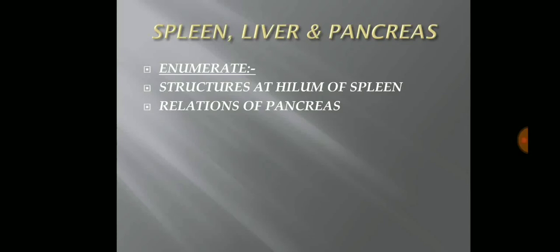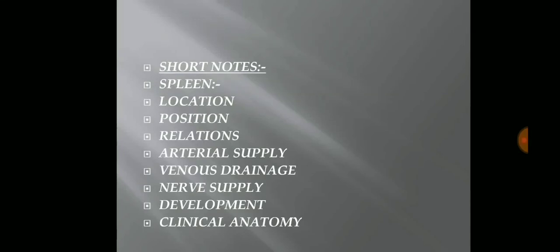Spleen, liver, and pancreas — this is the most important section, as questions are asked on this in the written examination as well as during the vivas taken during the practical exam. The enumerate questions that can be expected are: structures at the hilum of the spleen, and relations of the pancreas. Short notes on the spleen generally cover: location, position, relations, arterial supply, venous drainage, nerve supply, development, and clinical anatomy. A long question can also be asked on this.